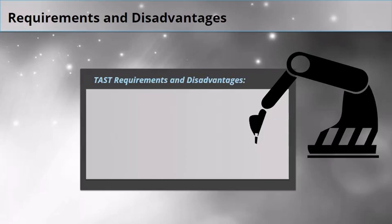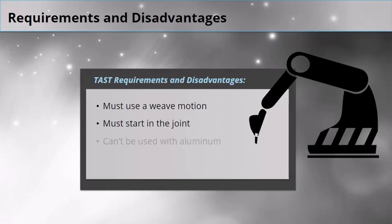TAST does have some requirements and disadvantages. It must use a weave motion. It must start in the joint, which is often done by touch sensing. It can't be used with aluminum because it's too conductive and doesn't create enough current change to track.